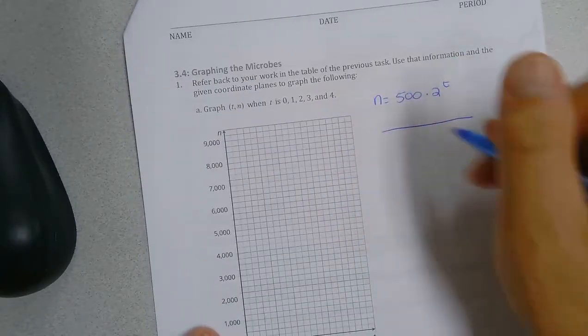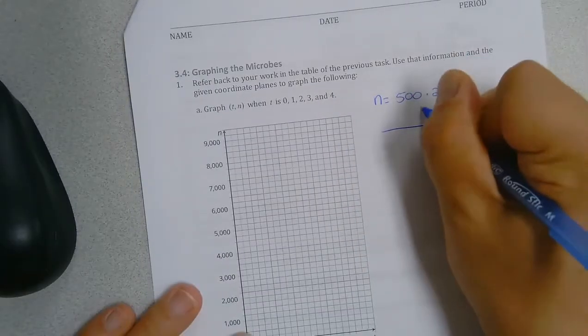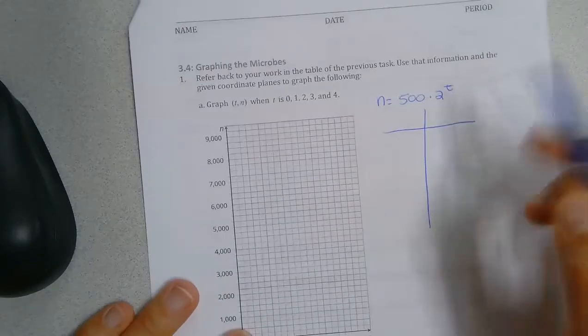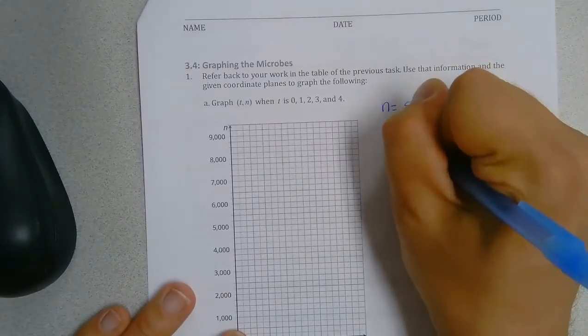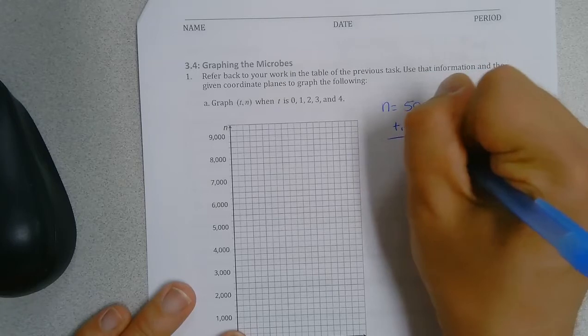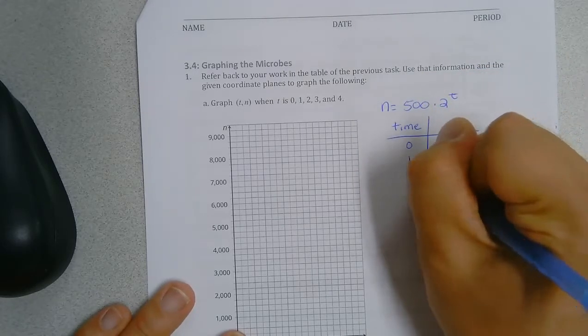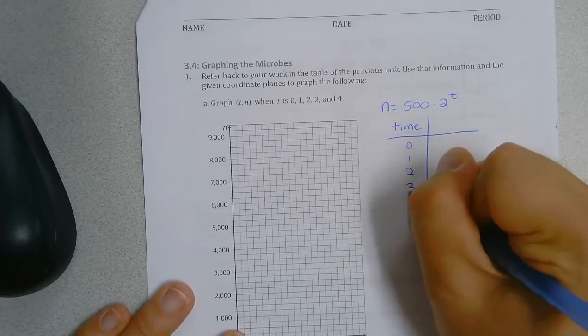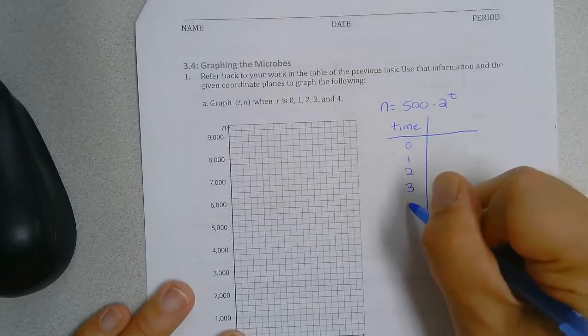So we're going to make a table. Remember the time is our input, so t really is time. So we're going to do 0 hours, 1, 2, 3, and 4.